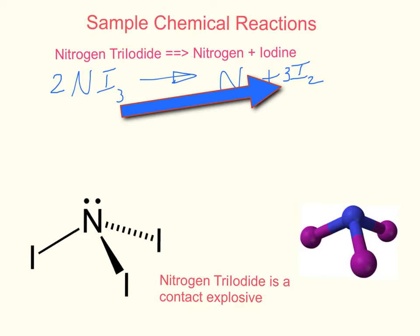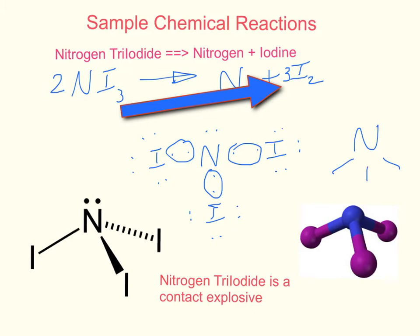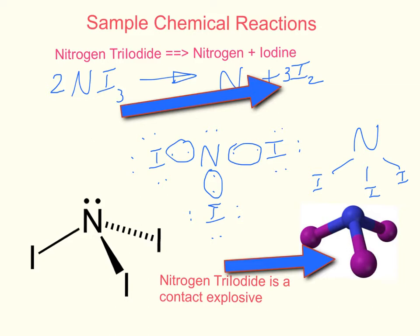Now let's do the bonding diagram for nitrogen triiodide. Nitrogen has a non-bonding pair and three unpaired electrons. Each iodine, with its seven valence electrons, has three non-bonding pairs and one unpaired electron, forming a single covalent bond with nitrogen. So nitrogen triiodide shows nitrogen with three single covalent bonds going into each iodine atom. Here is a ball-and-stick figure representing nitrogen triiodide. Nitrogen triiodide has no known industrial use; however, it is a contact explosive.